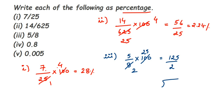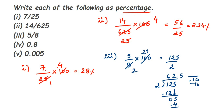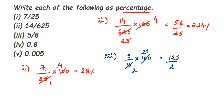125 is an odd number so it doesn't go in the 2-table, so I divide. 2 goes into 12 six times (remainder 0), drop the 5 — 2 twos are 4, remainder 1. Put the decimal point, bring down a zero: 2 fives are 10. So the answer is 62.5, which equals 62.5%.